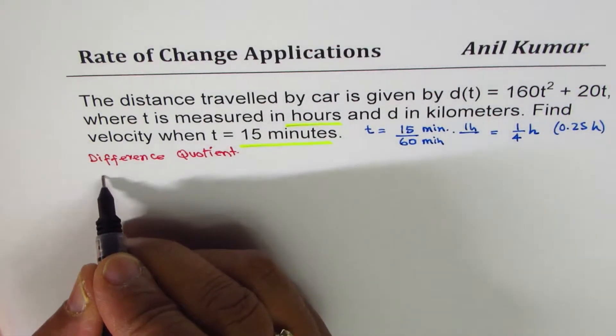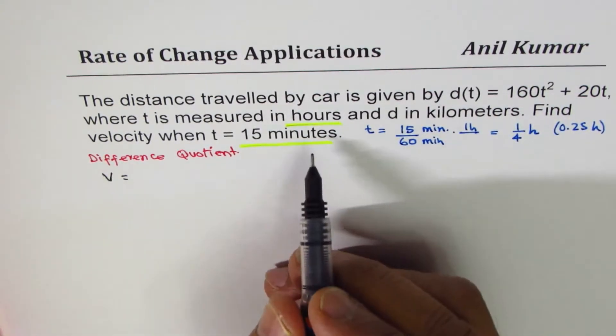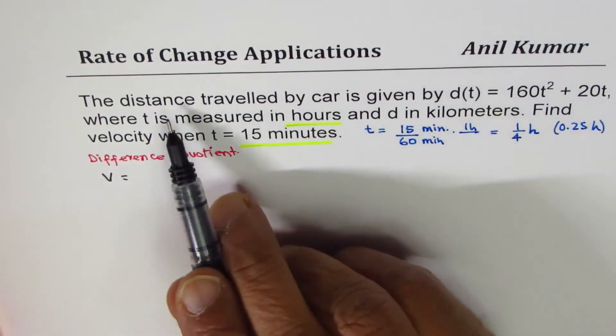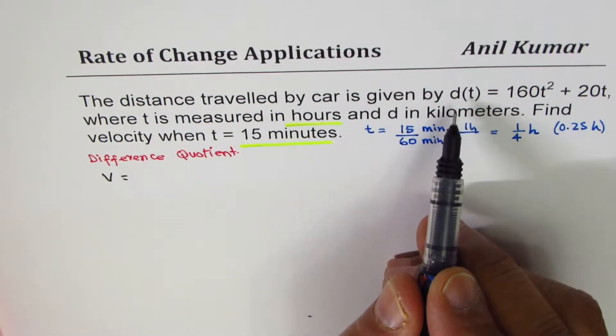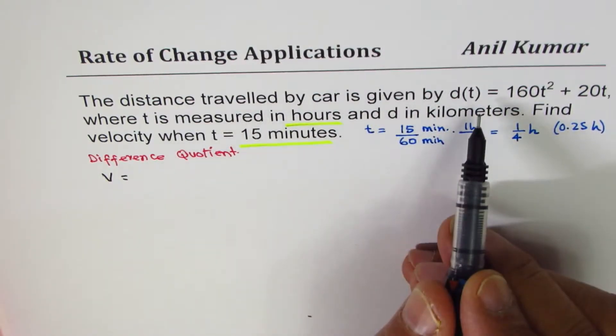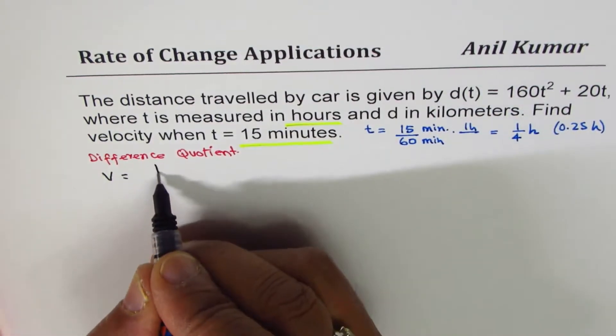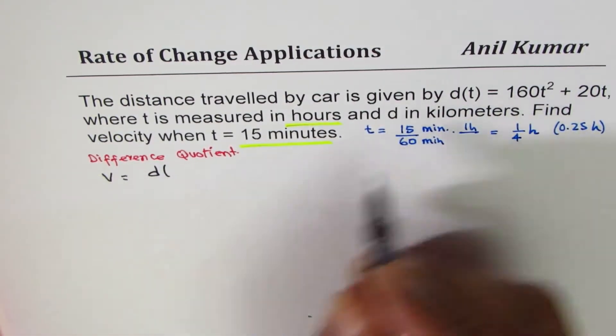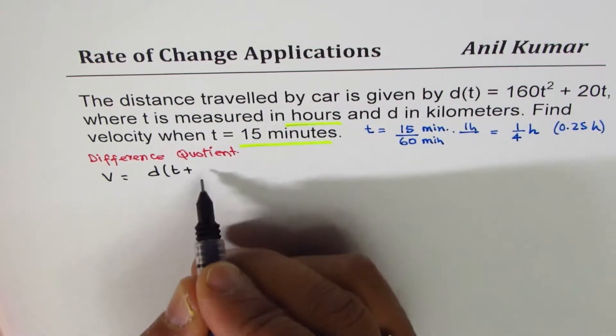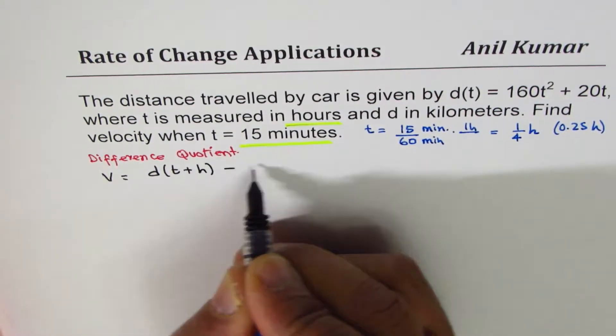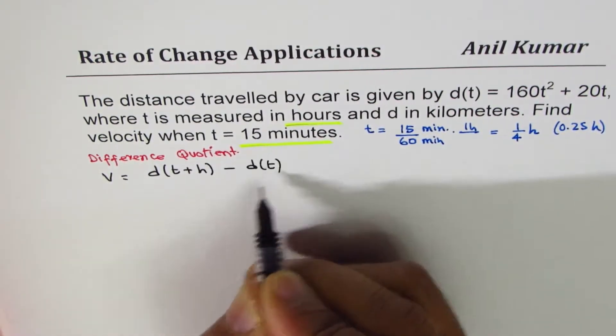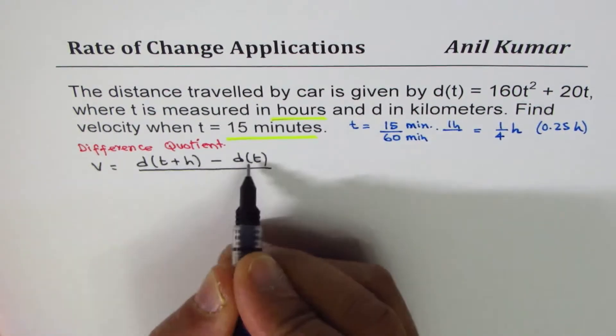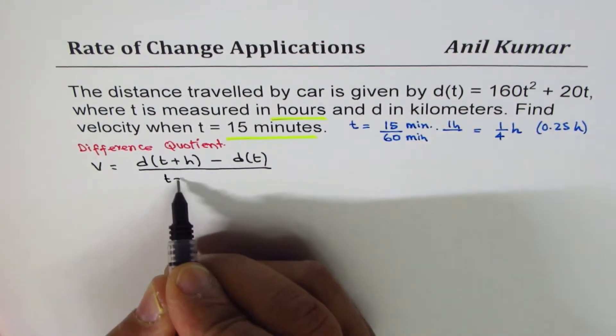As you know velocity is a rate of change of, in this case we are using this term distance. We'll say rate of change of distance means we can find at t plus some distance h minus at t divided by change in time which is t plus h minus t.